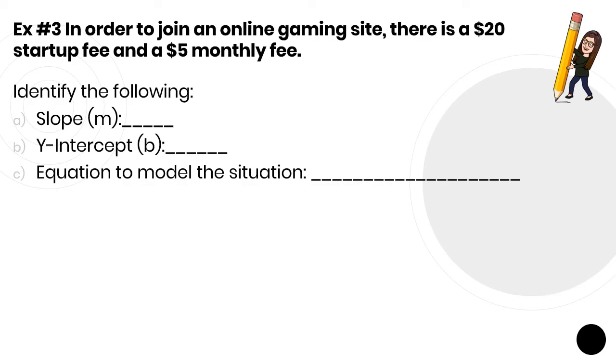All right, let's take a look at one more example. In order to join an online gaming site, there's a $20 startup fee and a $5 monthly fee. This happens in a lot of ways so that companies can make more money. Think of a gym membership, right? You have this one-time fee and then you pay monthly. Cell phones. You sort of have this initial startup fee when you join a certain company and then you pay monthly. So it's a really common scenario and example.